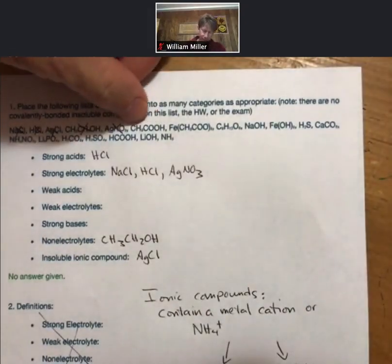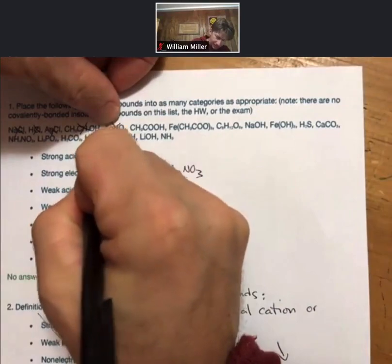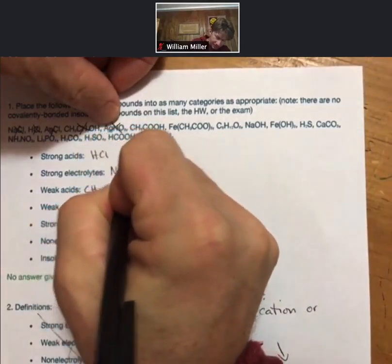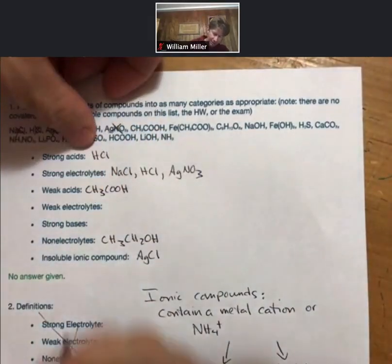COOH group, that means it is a weak acid. And all weak acids are also weak electrolytes.